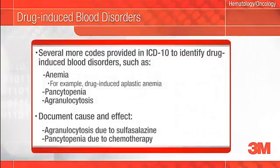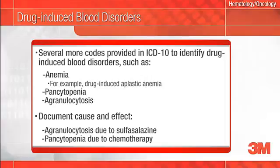ICD-10 provides a few more codes than ICD-9 to identify drug-induced blood disorders such as anemia, pancytopenia, and agranulocytosis. For example, there is now a code for drug-induced aplastic anemia; such a code did not exist in ICD-9. The important thing to remember here is that you must indicate cause and effect in your documentation. For example, agranulocytosis due to sulfasalazine or pancytopenia due to chemotherapy. Be sure to name the drug or drugs that induced the condition. Some of the codes further specify that the drug-induced disorder was caused by chemotherapeutics and antineoplastic drugs.